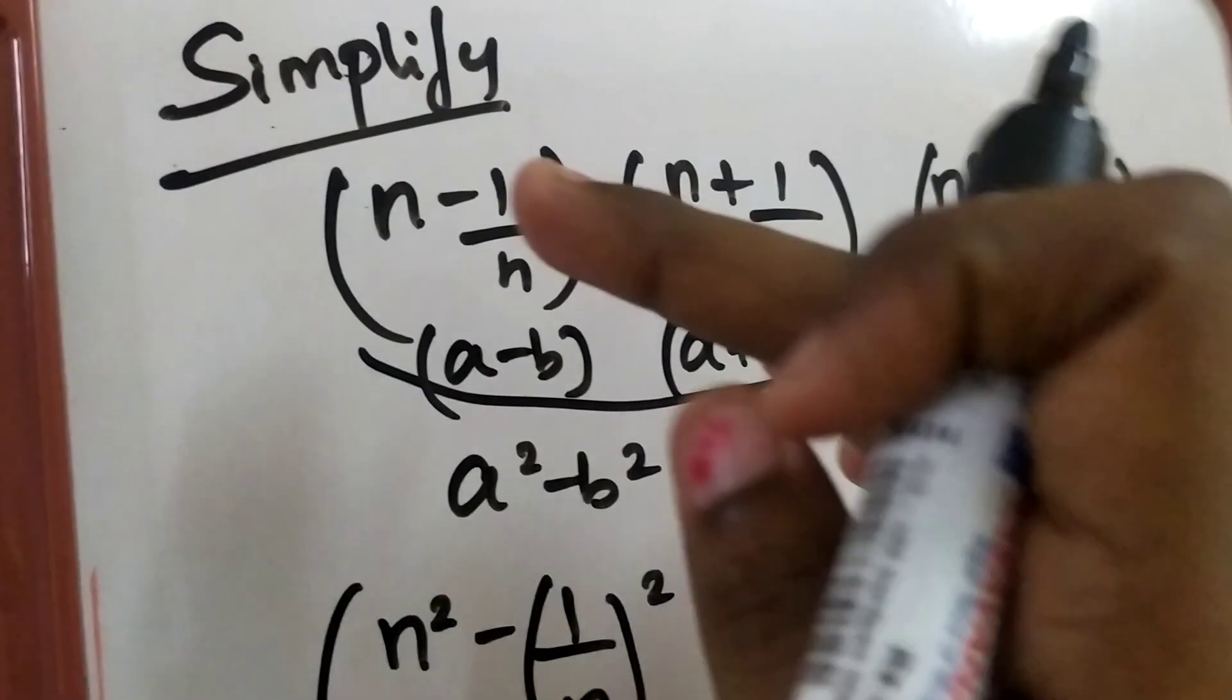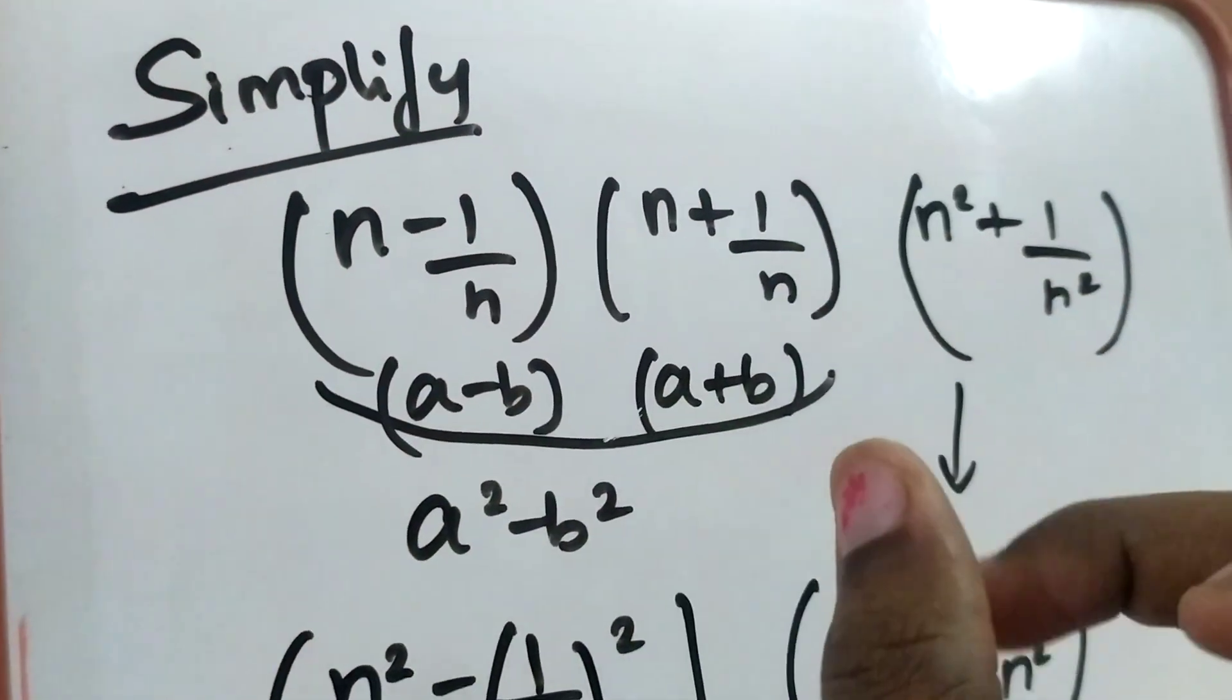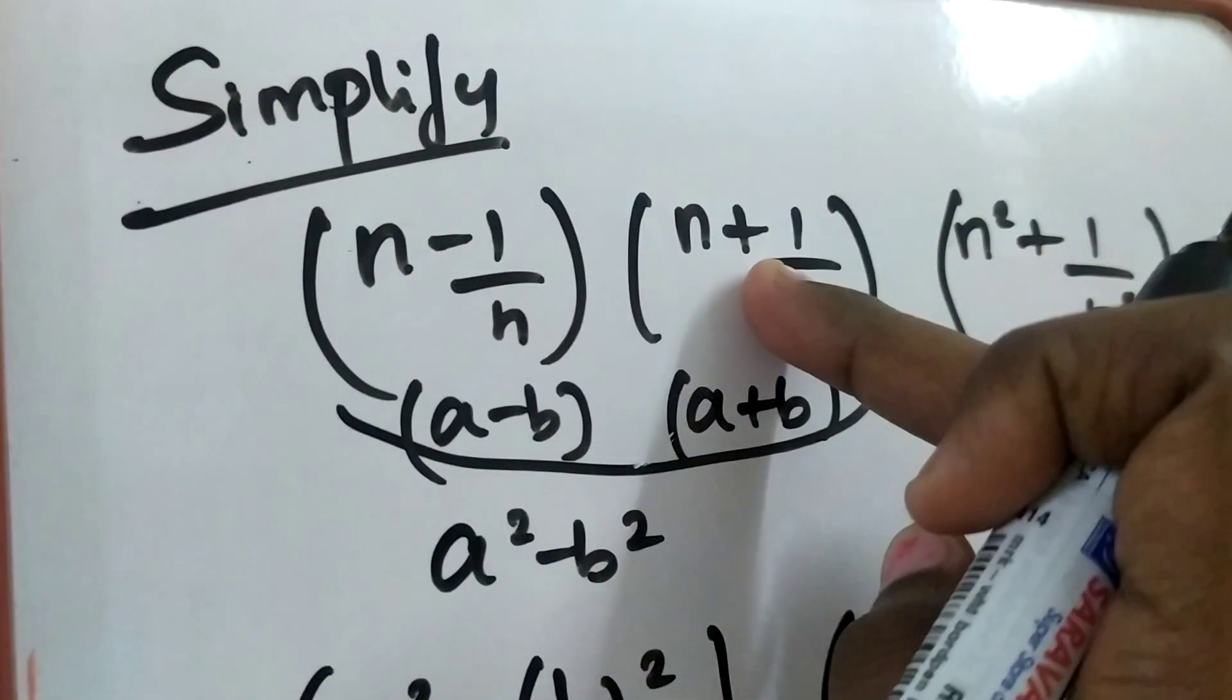Can you understand? This is in the format of a minus b, a plus b. Why am I writing this? Here also n, here also n.